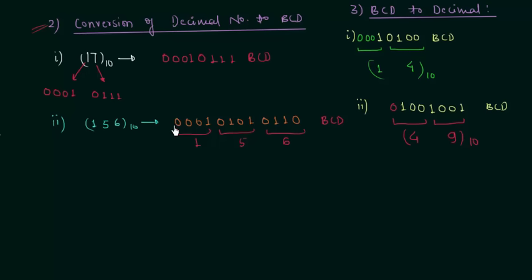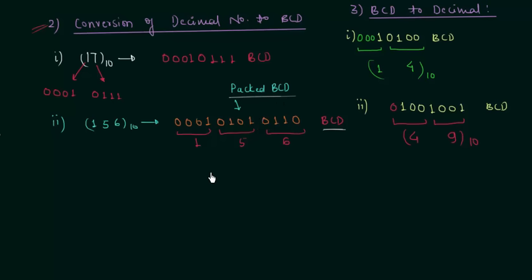This BCD number is also called Packed BCD. BCD numbers representing decimal numbers beyond 9 are called Packed BCD. Here we are representing 156, which is obviously greater than 9, and its BCD representation is called Packed BCD.